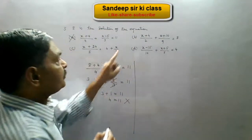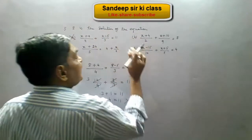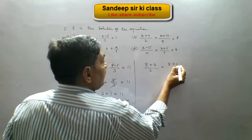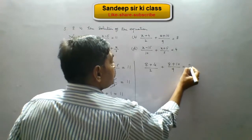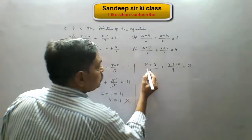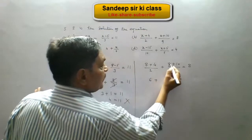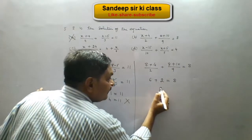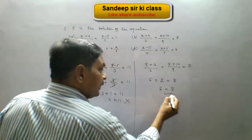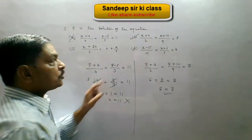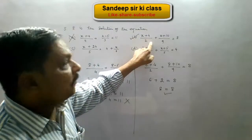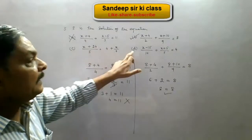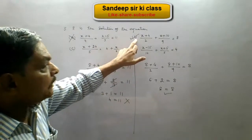Now we check option B. Putting x equals 8 we get (8 plus 4) upon 2 plus (8 plus 10) upon 9 equals 8. This gives 12 upon 2 plus 18 upon 9, which is 6 plus 2 equals 8. This gives 8 equals 8, which is correct. Hence 8 is a solution and a root of this equation. So option B is correct, and we do not need to check options C and D.